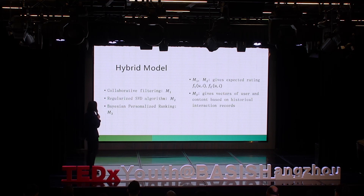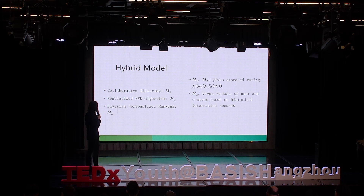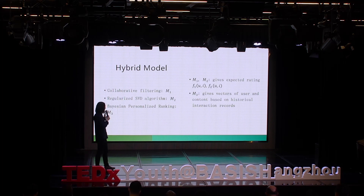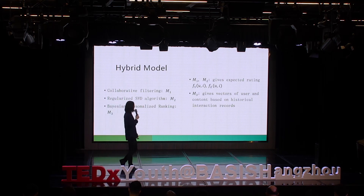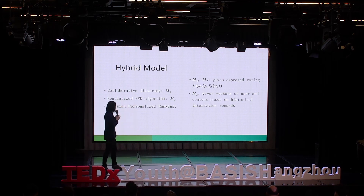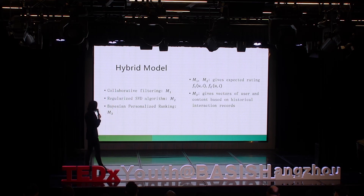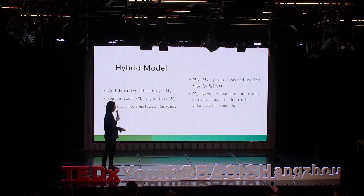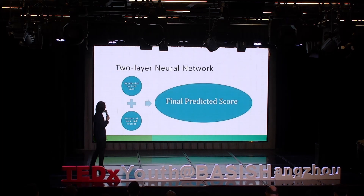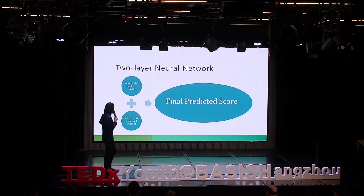Here are the three algorithms I've introduced. The first is collaborative filtering and the second is the regularized SVD algorithm. These two always produce an expected rating — denoted as M1 and M2. The third is Bayesian personalized ranking, which gives a ranking based on historical interaction records, and also provides vectors of users and contents from M3. We then combine those inputs together to produce a final predicted score.